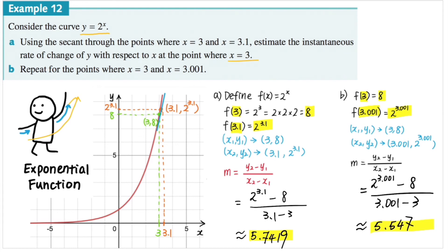Comparing the two gradients, we notice that the gradient in part B is less than in part A, meaning we're getting a closer estimation. This shows that when estimating instantaneous rate of change, the closer the two points are, the more accurate the estimation we obtain. So try to pick two points that are as close as possible — that will generate a more accurate estimation for the gradient. Hope you find this video helpful, and hope to see you in the next video. Bye!